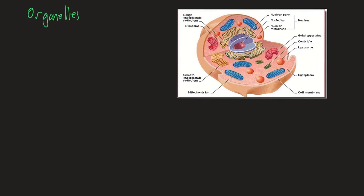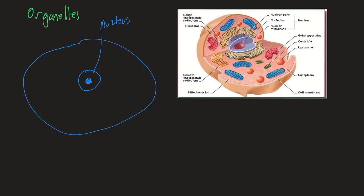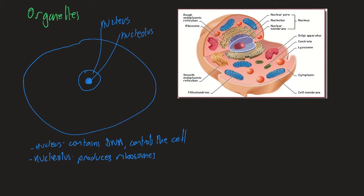I'm going to draw a stylised diagram of a cell. First is the nucleus, which contains a part called the nucleolus — shown here in black. The nucleus is like the brain of the cell: it contains the DNA and controls the cell. The nucleolus, inside the nucleus, actually produces the ribosomes.